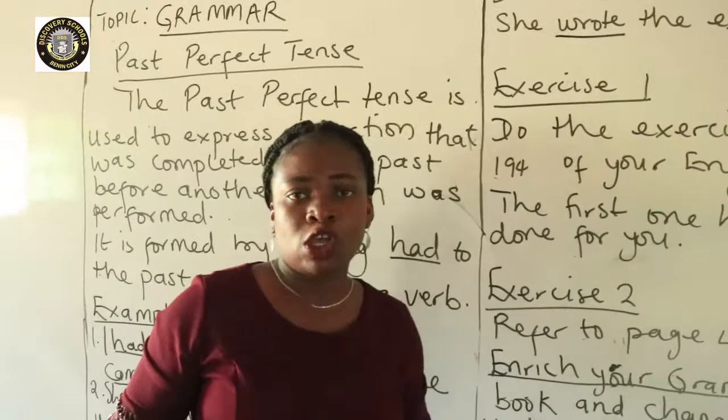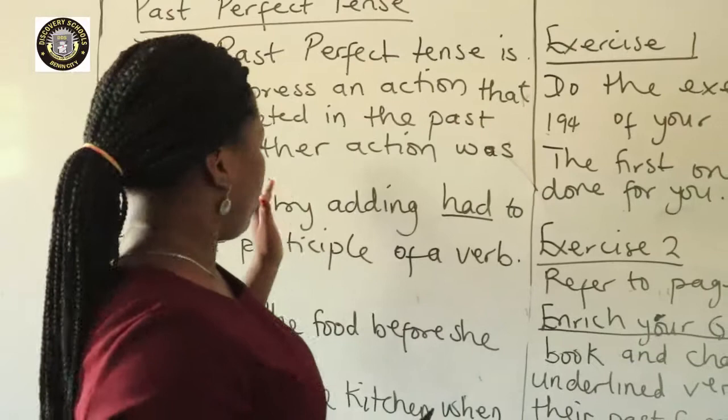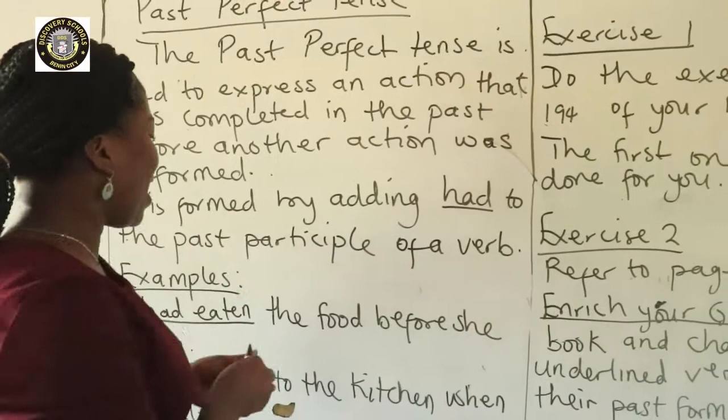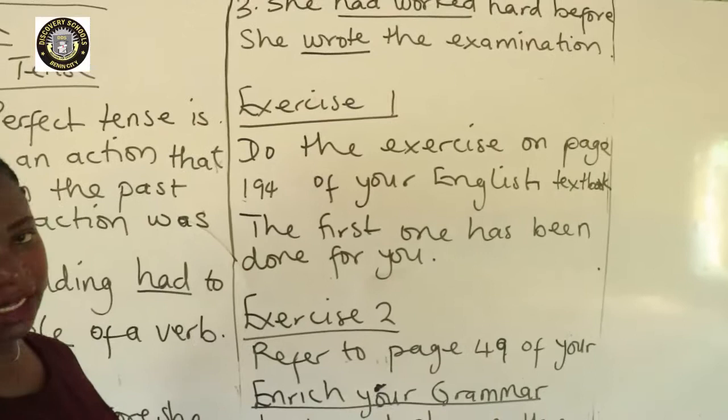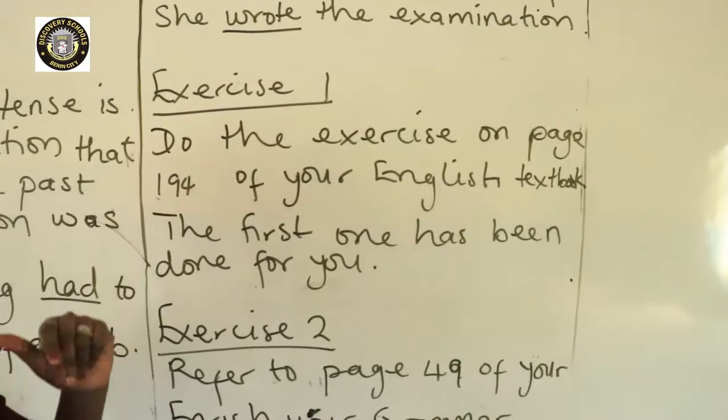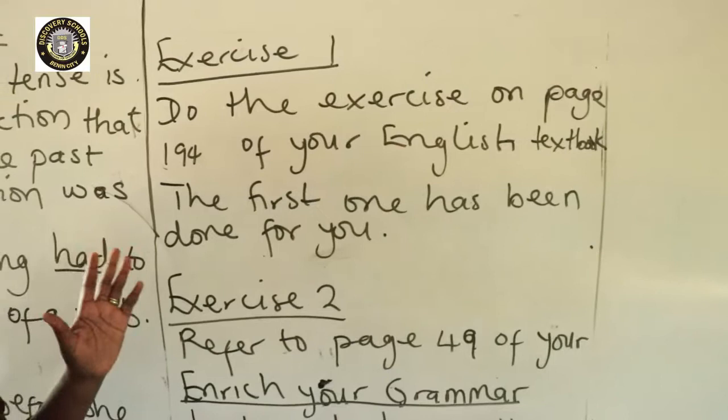But make sure that when you are giving examples, you have to follow this formula, which is 'had' plus the past participle of a verb. We have an exercise in our textbook. So, do the exercise on page 194 of your English textbook, talking about the past perfect tense.